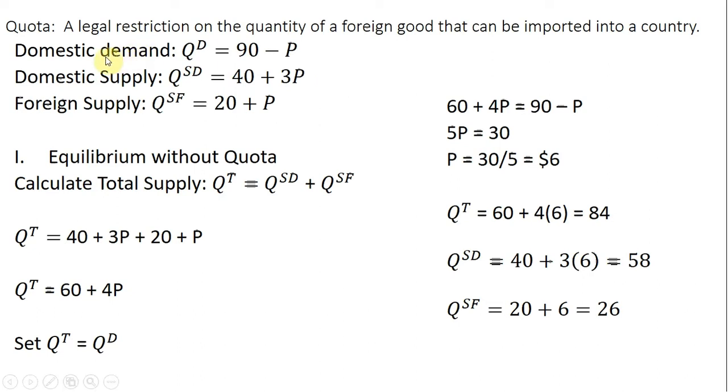So we have a setup here where we have the domestic demand given by Q^D = 90 - P. We have the domestic supply given by Q^SD = 40 + 3P. And then we have foreign supply given by Q^SF = 20 + P.